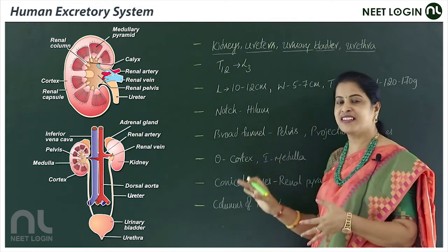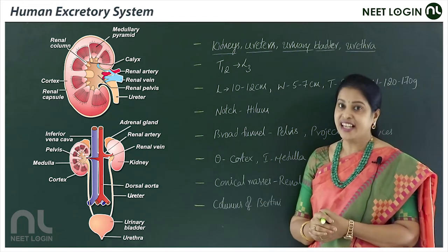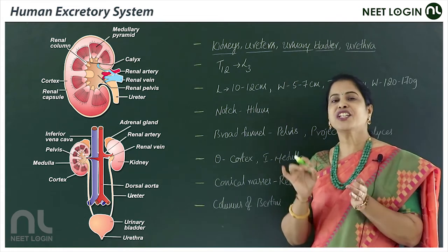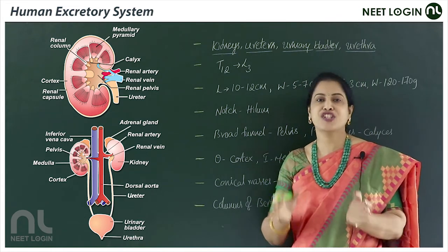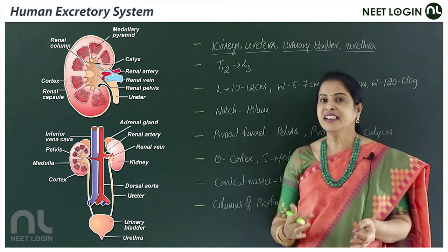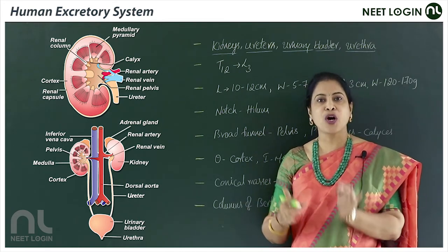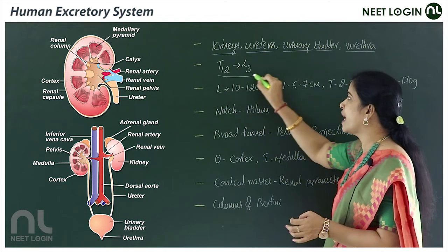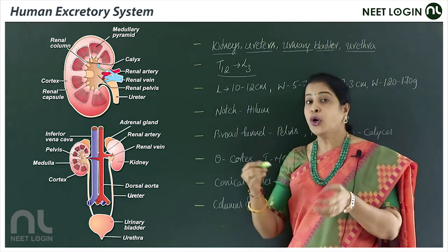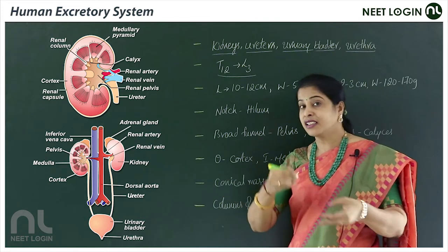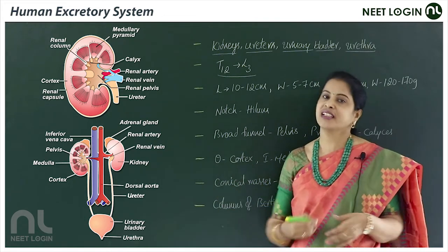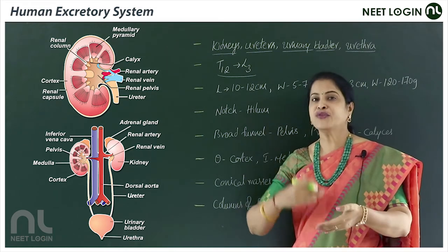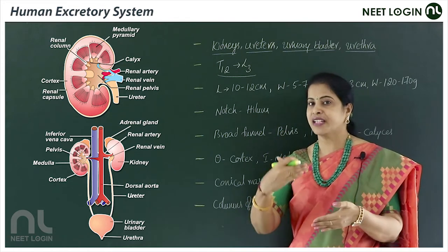Let's talk about the kidneys — where they are located and what their shape is. The kidneys are bean-shaped, reddish-brown colored structures. They are located between the last thoracic and the third lumbar vertebrae, as previously discussed in the vertebral column formula.